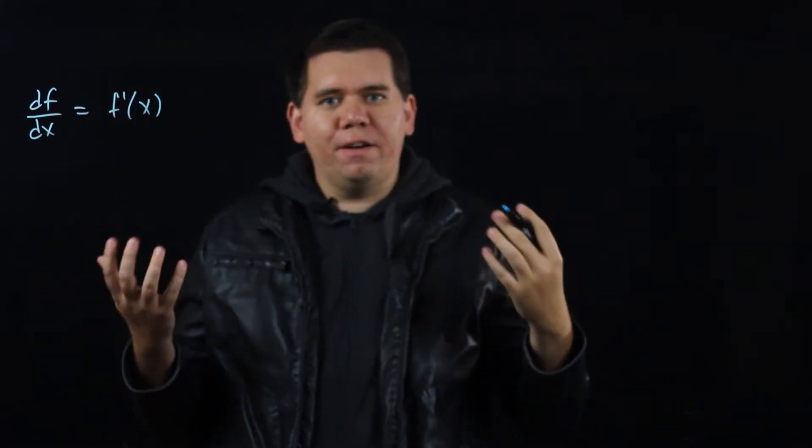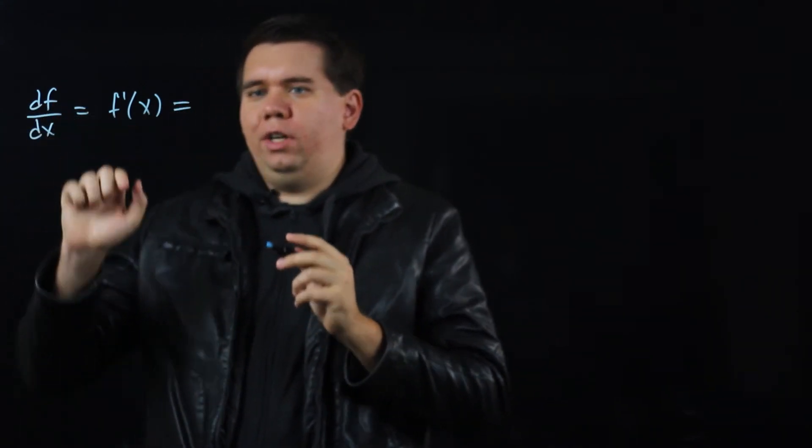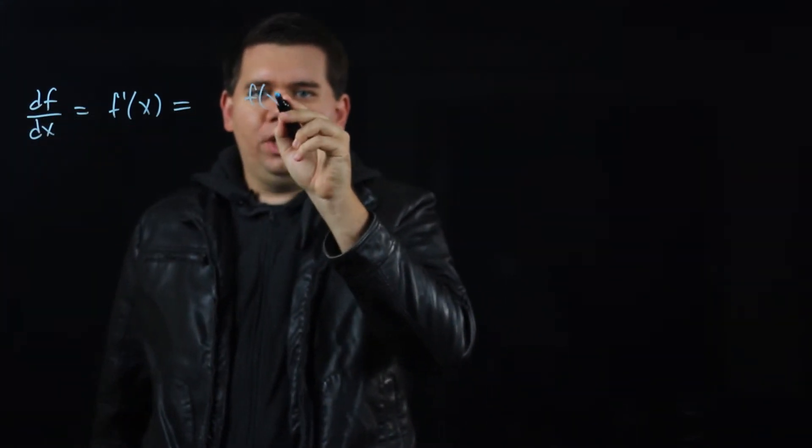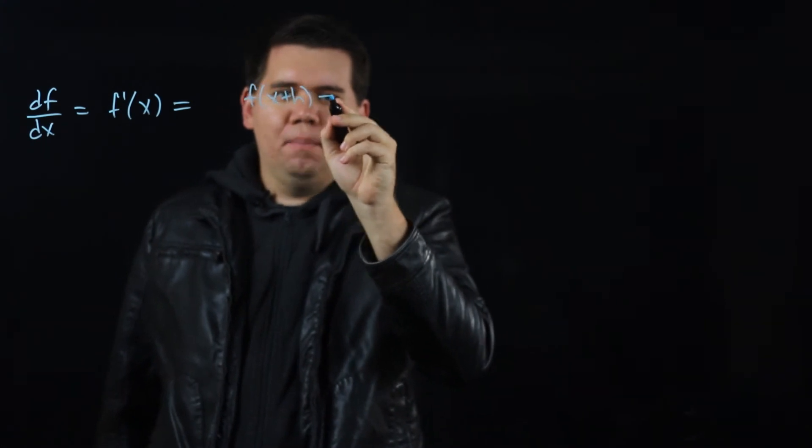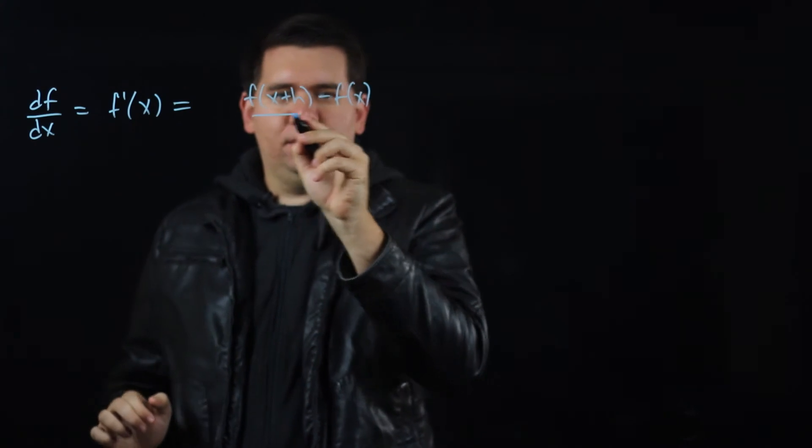This notation follows from the definition of derivative. Derivative measures the change in f, how much f is changing, so f(x+h) minus f(x) over the change in x.